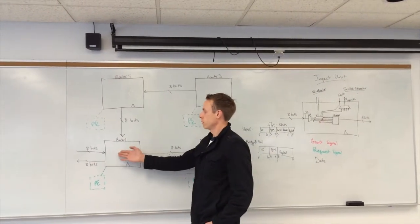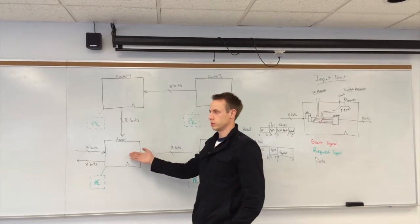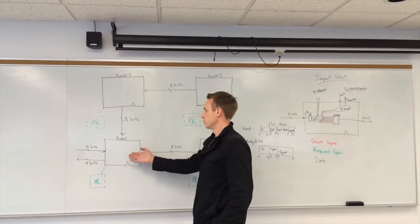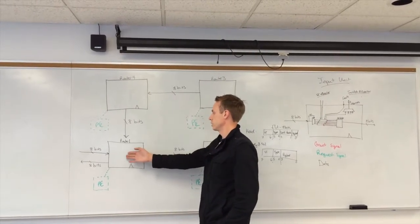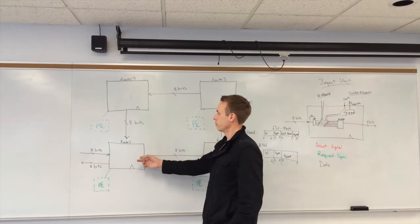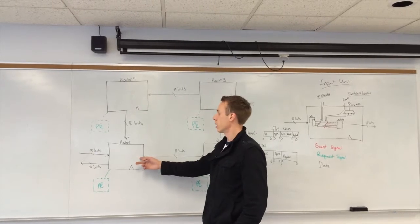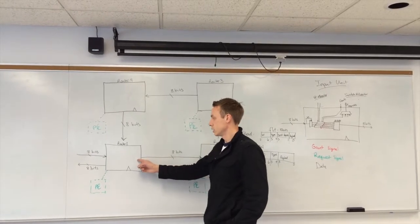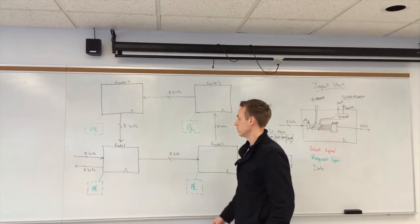So when we get data in, it'll go through the process that we've defined in the router using the switch allocator. It'll route appropriately using the R field — the desired output unit.